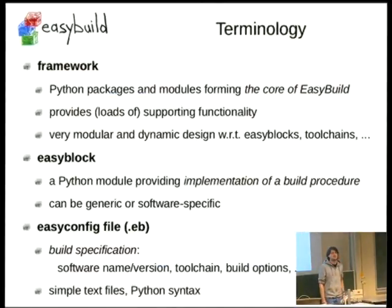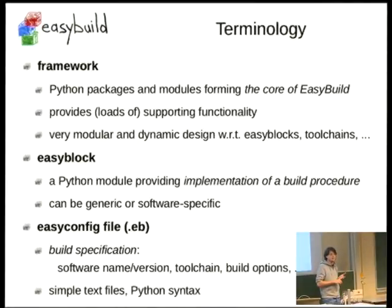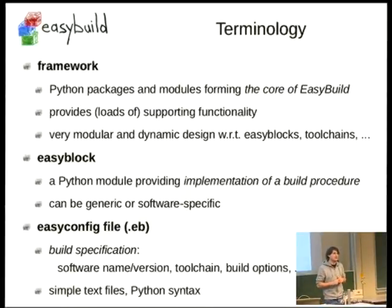EasyBuild is split into three parts. We have the framework, which is the core of EasyBuild. It provides all core functionality, like commands for patching or applying patches. All of this is implemented in the framework. Then we have EasyBlocks. Some software requires more than just a download URL and version in the recipe. By default we do configure, make, make install. But of course not all software uses this standard procedure.